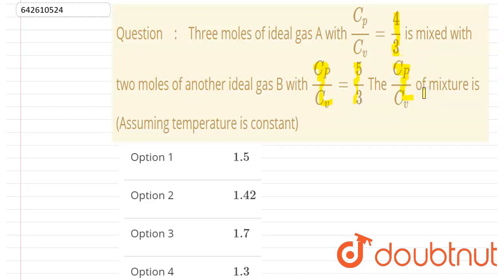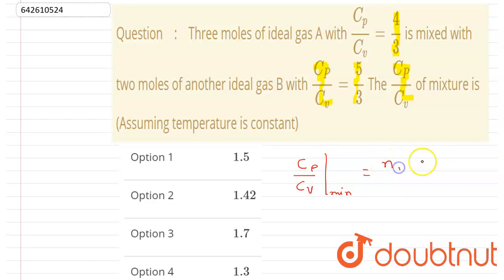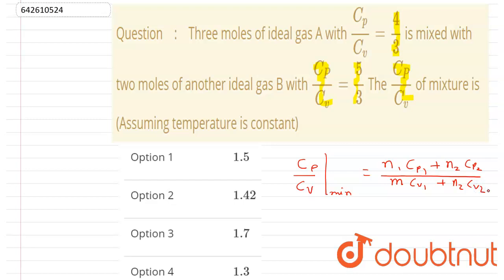For the mixture, the cp/cv ratio is given by: (cp/cv)_mixture = (n1·cp1 + n2·cp2) / (n1·cv1 + n2·cv2). This is the formula for the cp/cv ratio of any mixture.